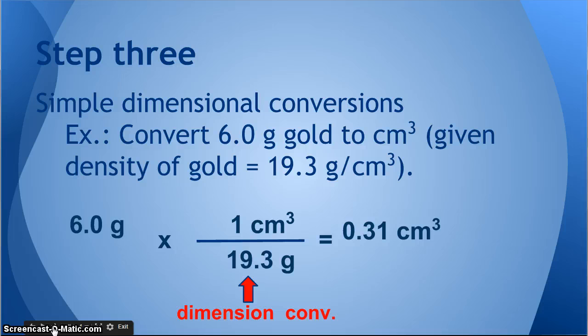Step three, the third type, is a dimensional conversion. In this case, we're converting from one type of dimension to another. This is where a lot of students get tripped up. Convert 6 grams of gold to cubic centimeters. Grams is a mass, cubic centimeters is a volume. So how can you change a mass into a volume? They're two totally different things.